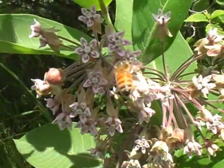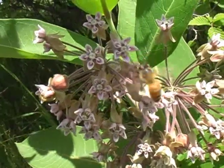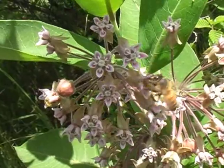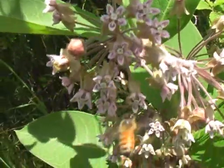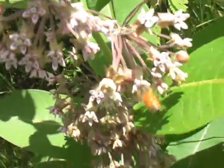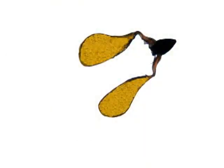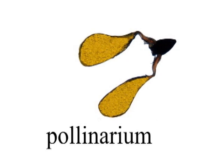Milkweed flowers also must be pollinated, but the process here is very different from that of most plants. The pollen in a milkweed is packaged in a waxy mass. This package is a pollinium — plural: pollinia — and the whole structure is called a pollinarium.